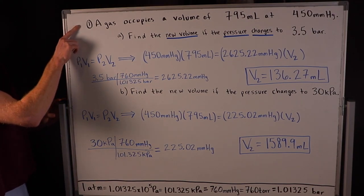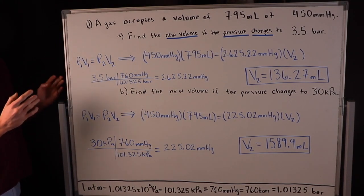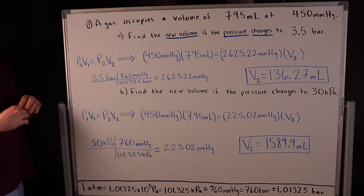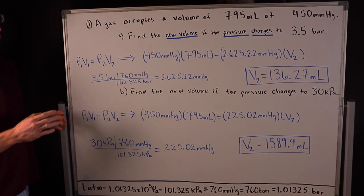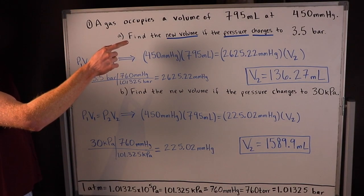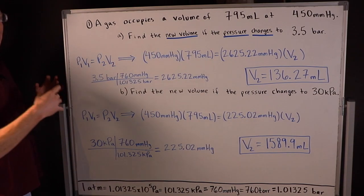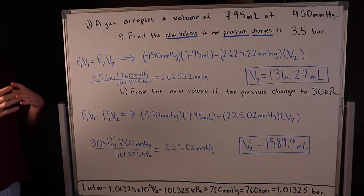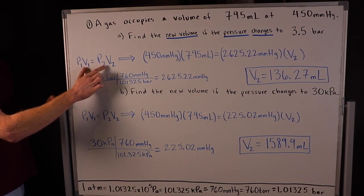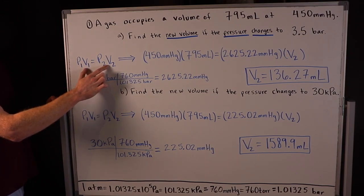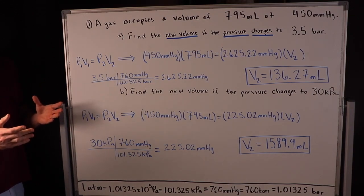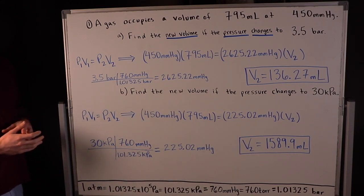In problem one, a gas occupies 795 milliliters at 450 millimeters of mercury. Part A asks for the new volume if the pressure changes to 3.5 bar. We have an initial volume and initial pressure, and we need a final volume with a new pressure — so this is Boyle's law: P1 V1 equals P2 V2. The problem is the units don't match on both sides of the equal sign; in a gas law problem, units must be the same on both sides.